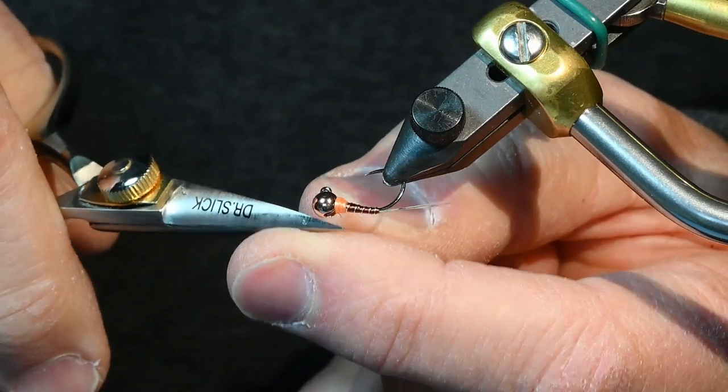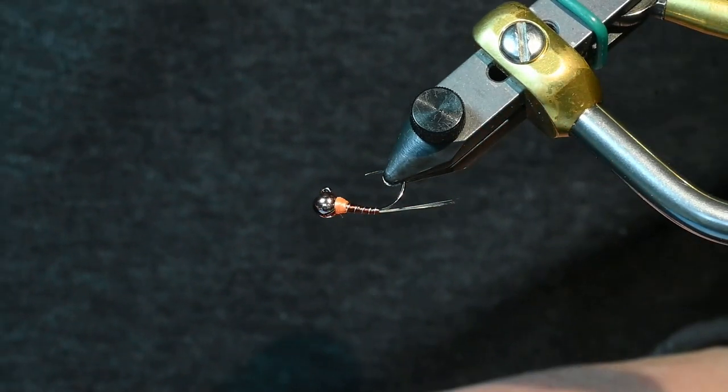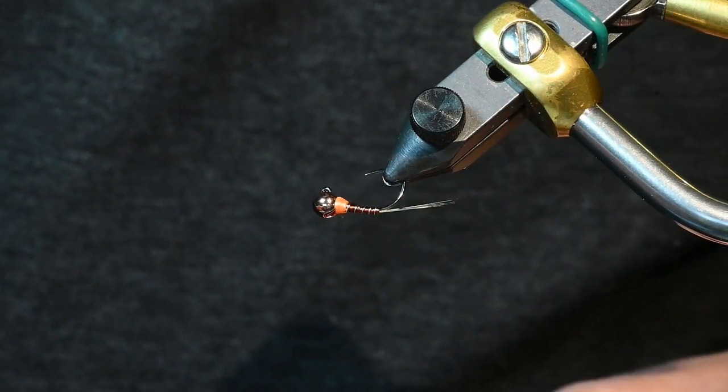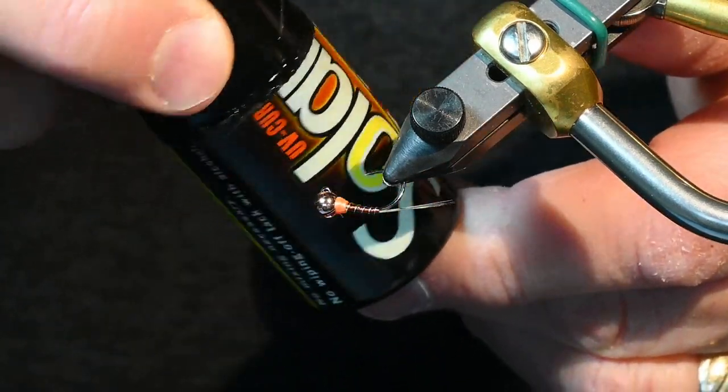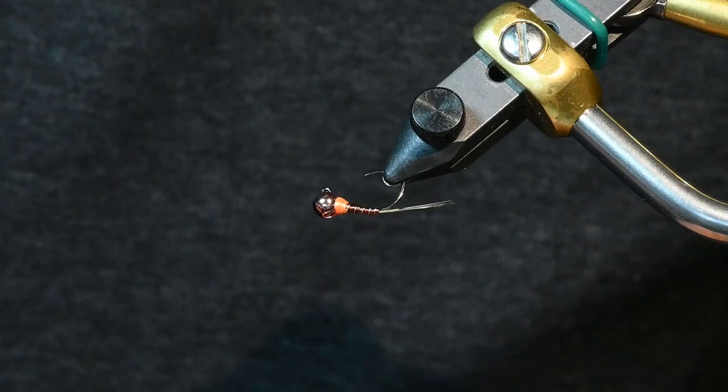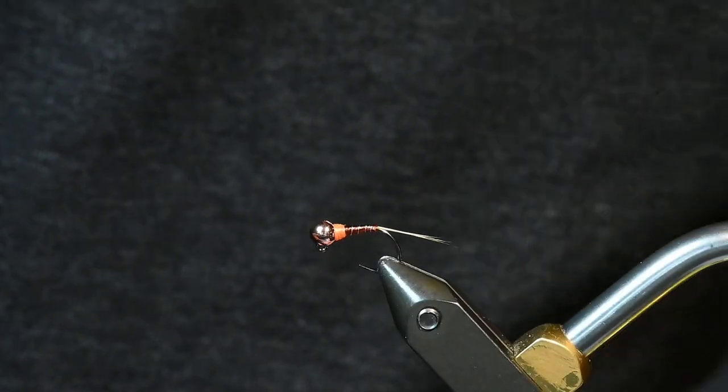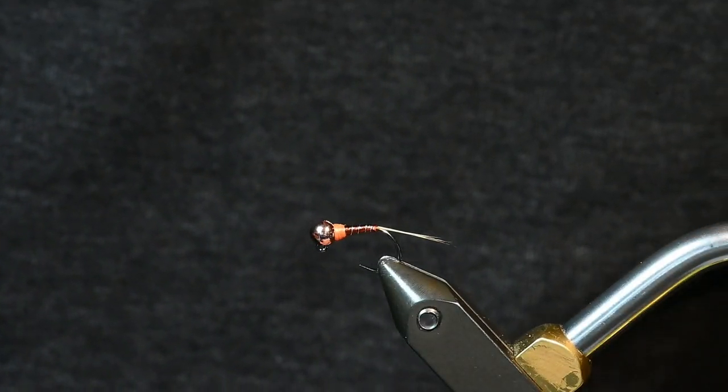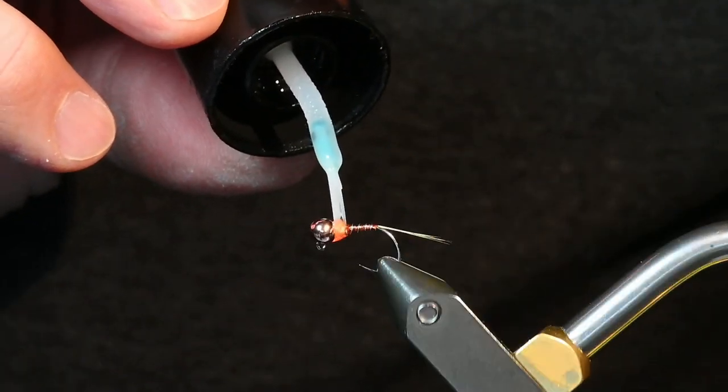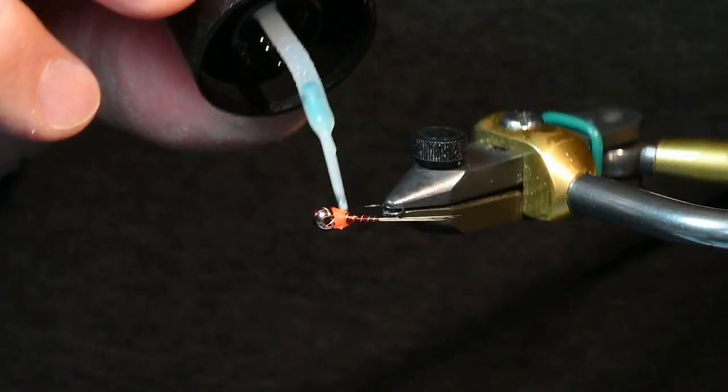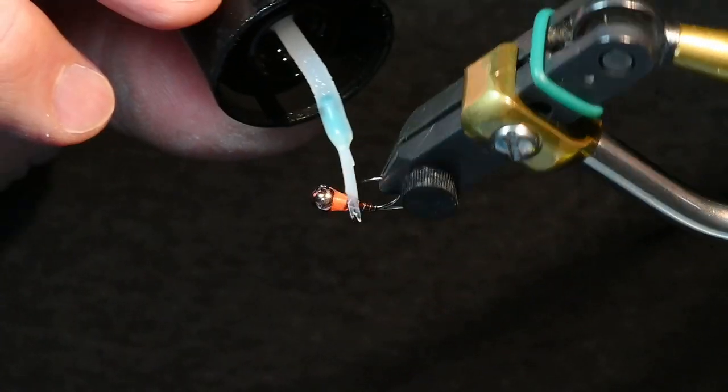I'm not trying to secure it very tight. I just want it to hold in place and then I'll coat it with my UV resin. I'm using this Bone Dry from Solarez, and I like it because it has a brush and it's very easy to apply.